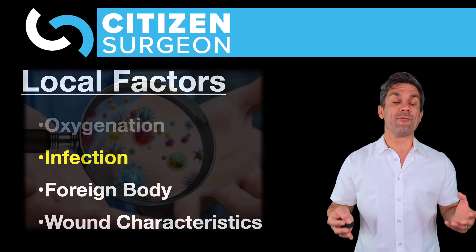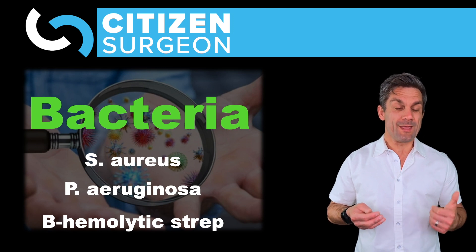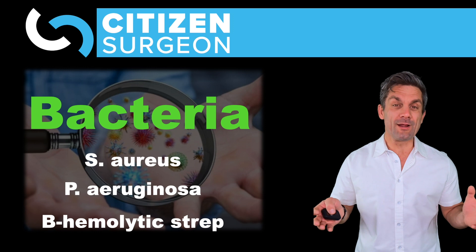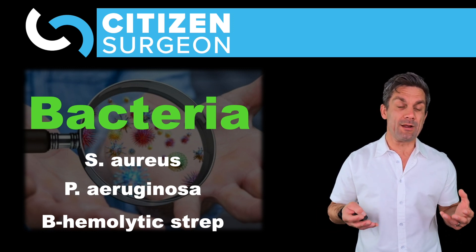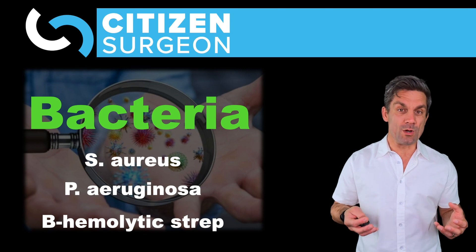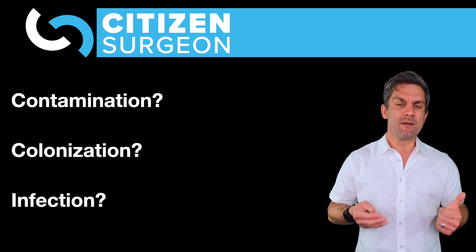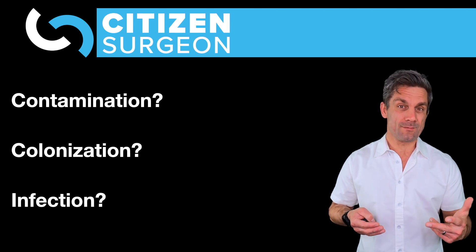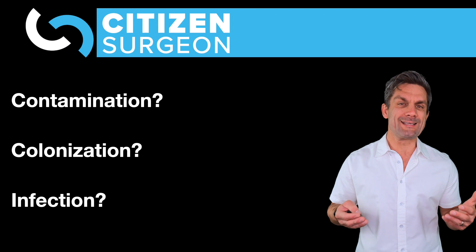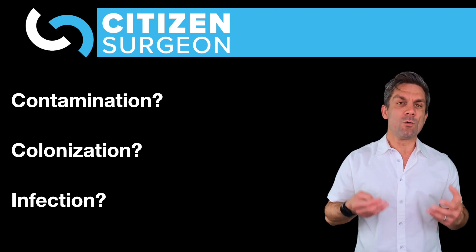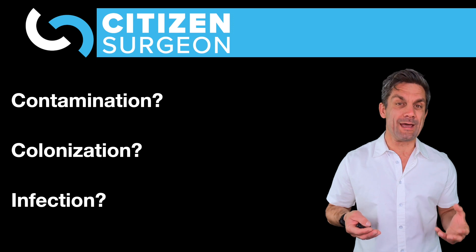Infection, or prolonged inflammation, is another local factor that can impair wound healing. We are covered in bacteria — the most common being Staph aureus, Pseudomonas aeruginosa, and beta-hemolytic streptococci. When we get a laceration or penetration of the skin barrier, these bacteria have access to the wound. It's important to understand the difference between contamination, colonization, and infection. Contamination is when you have non-replicating bacteria in a wound.